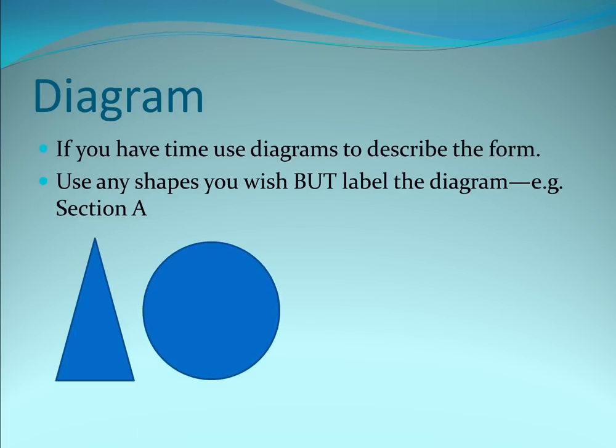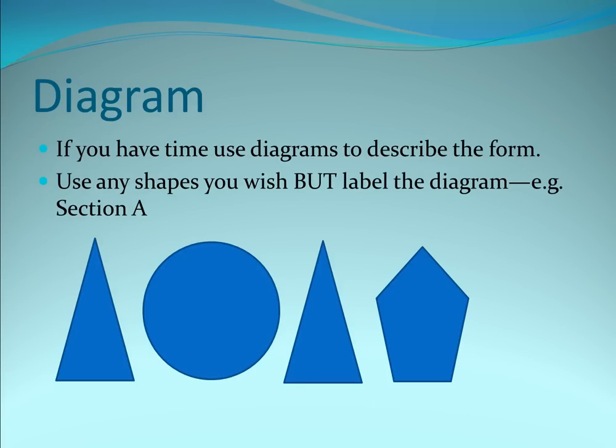So I've added a circle here. This could be binary form. So section A, section B. Now by putting the triangle back, that means it's ternary. A, B, A. And again, you would state what instrument's in what section. Then we've got another one, C. And if we put the other one in, we've got A, B, A, C, A. And that'd be rondo form, because it's always returning to the main thing. And that's about as much as you need to know for structure.